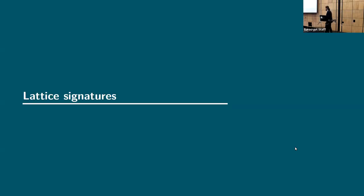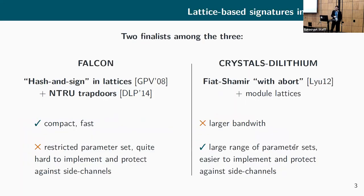Let me make a brief panorama of where we are in terms of lattices for the NIST competition. Among the finalists of round three, two of them are lattice-based. On the one hand we have the Falcon signatures, which is a hash-and-sign type signature based on NTRU lattices. It's very compact and fast, however by design the range of admissible parameter sets is very small. It's also quite hard to implement correctly and therefore difficult to protect against side channels, at least from a masking point of view.